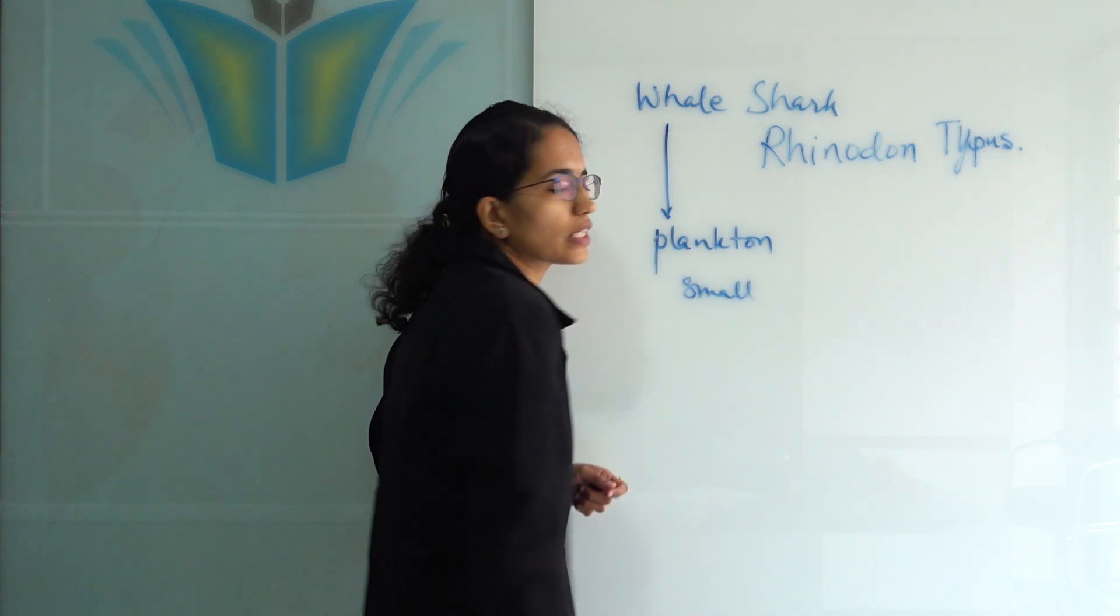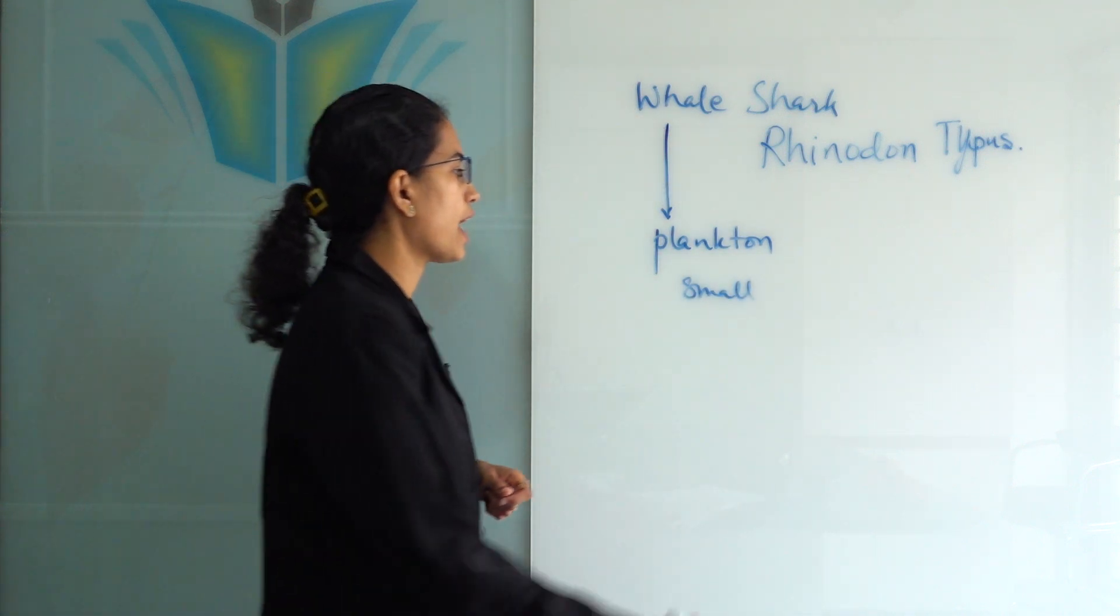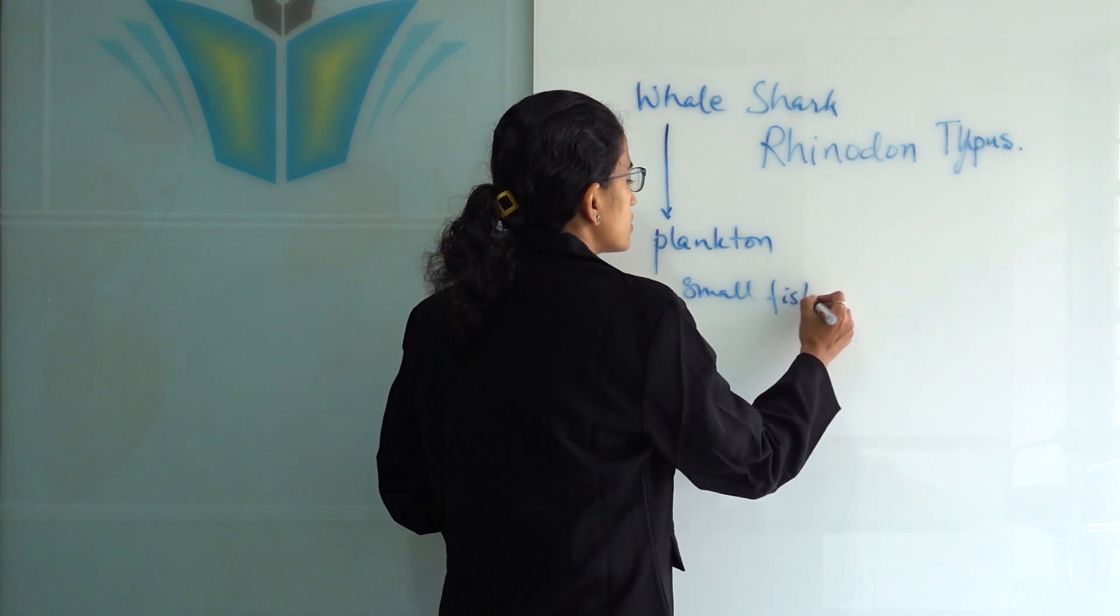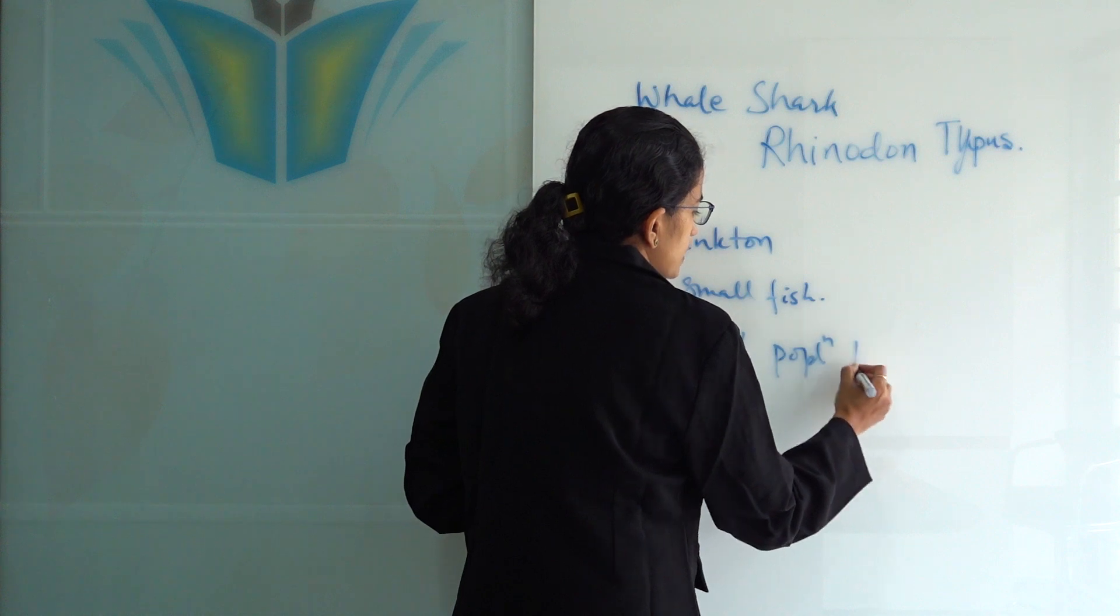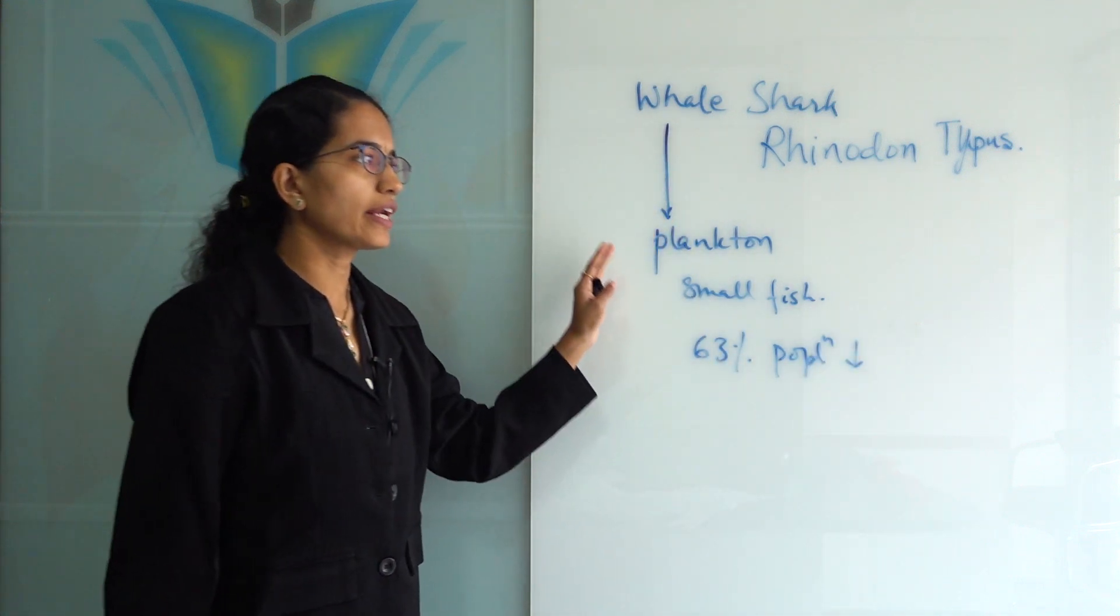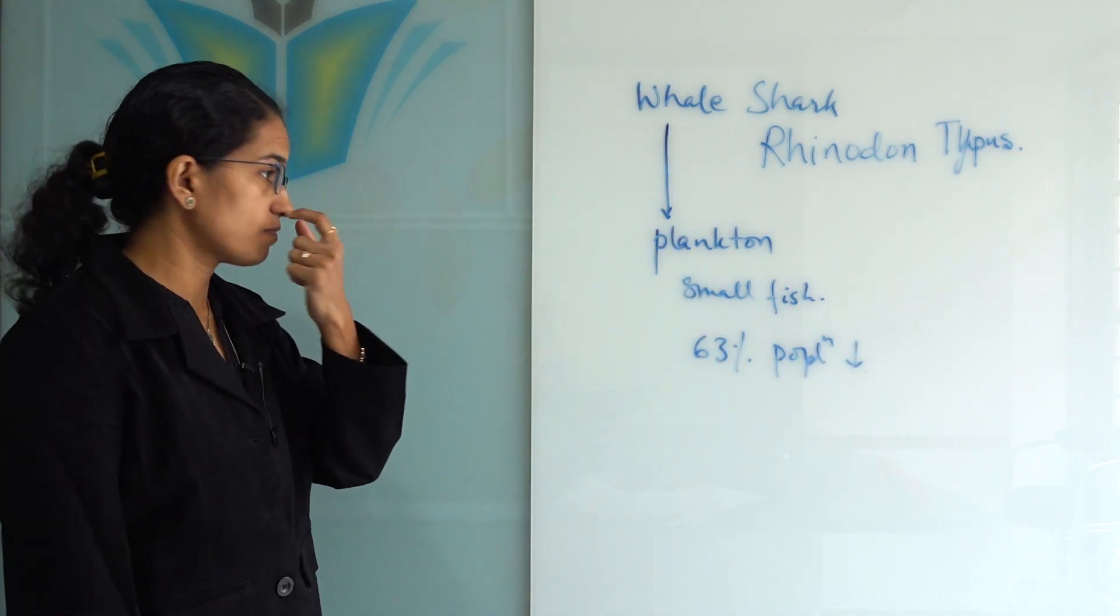They are found in deep oceans, and over the last 75 years, we have seen that 63% of whale shark populations have declined. Specifically, there has been a high decline in unregulated fishing zones.